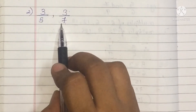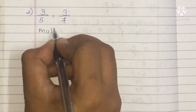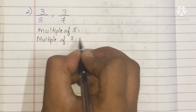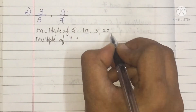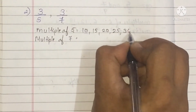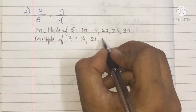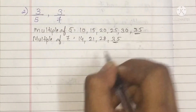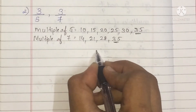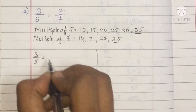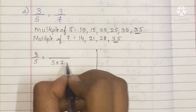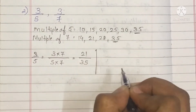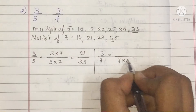Number 2: that is 3 upon 5 and 3 upon 7. We will check the multiples of 5 and 7. We need to write the table of 5 up to 7 and the table of 7 up to 5. The common multiple of 5 and 7 is 35. For 3 upon 5, we multiply by 7, so 5 sevens are 35 and 3 sevens are 21.